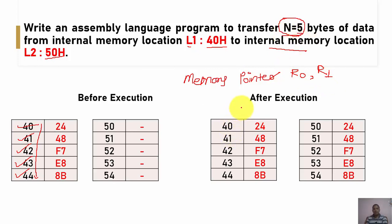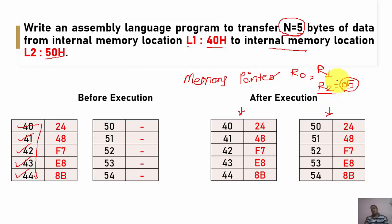To keep track of the blocks of memory transferred from source to destination, and since n = 5, we are using one counter. I am using R2 register as a counter, where we define the count equal to the number of memory blocks to transfer. If we need to copy 6 memory bytes, the counter value will be 6.